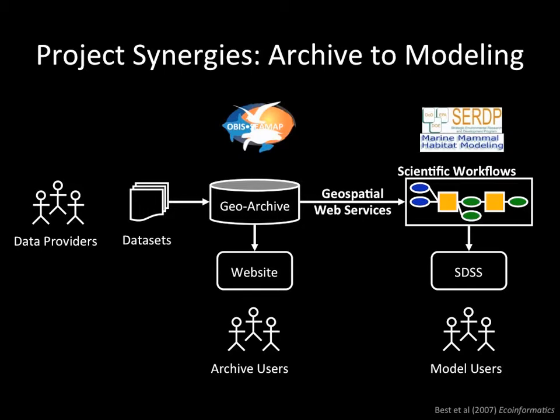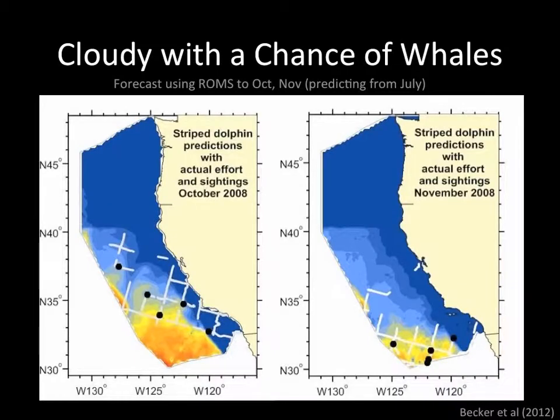We're now at the spatial decision support system. The end result or goal is to have this predictive map — cloudy with a chance of whales. We want a whale cast: predict where they are now, where they're going to be in the future, so we can manage our human use of the oceans to minimize impact on endangered species. That's one project.